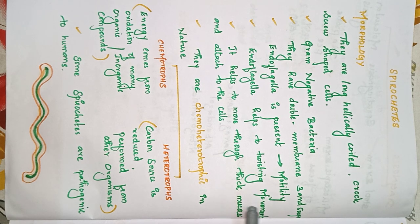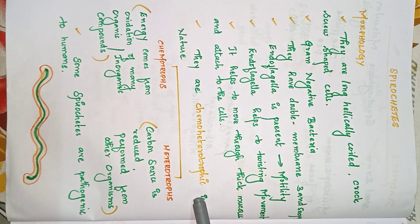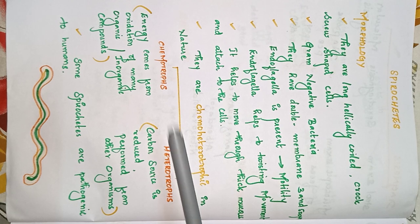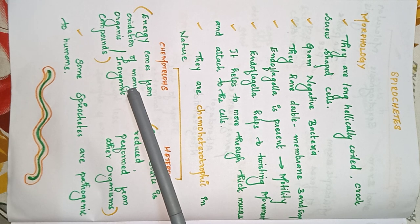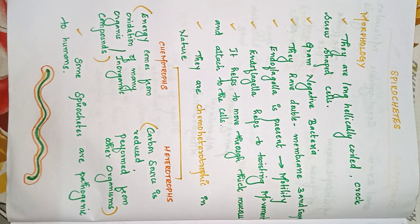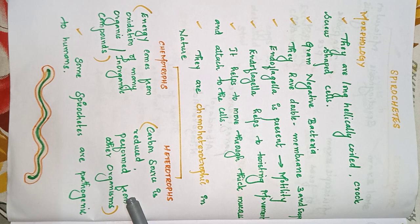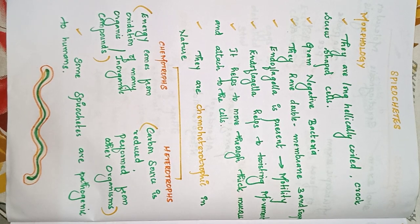Endoflagella help in twisting movement, enabling the organism to move through thick mucus and attach to cells. Spirochetes are chemoheterotrophic in nature — chemotrophs get energy from oxidation of inorganic and organic compounds, while heterotrophs obtain carbon from other organisms. Some spirochetes are pathogenic to humans.